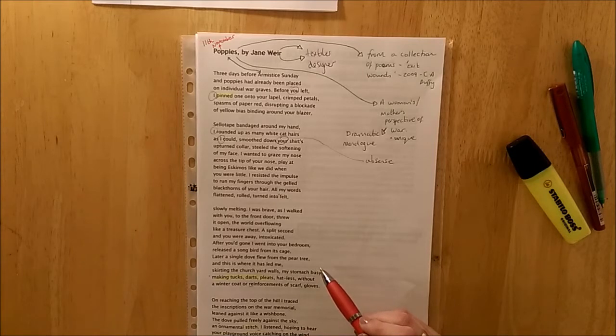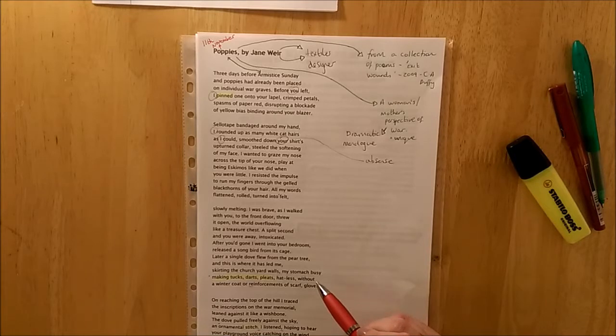After you'd gone, I went to your bedroom. Released a songbird from its cage. Later, a single dove flew from the pear tree. And this is where it has led me. Skirting the churchyard walls. My stomach busy. Making tucks, darts, pleats, hatless without a winter coat. Or reinforcements of scarf, gloves. On reaching the top of the hill, I traced the inscriptions on the war memorial. Leaned against it like a wishbone. The dove pulled freely against the sky. An ornamental stitch. I listened. Hoping to hear your playground voice. Catching on the wind.